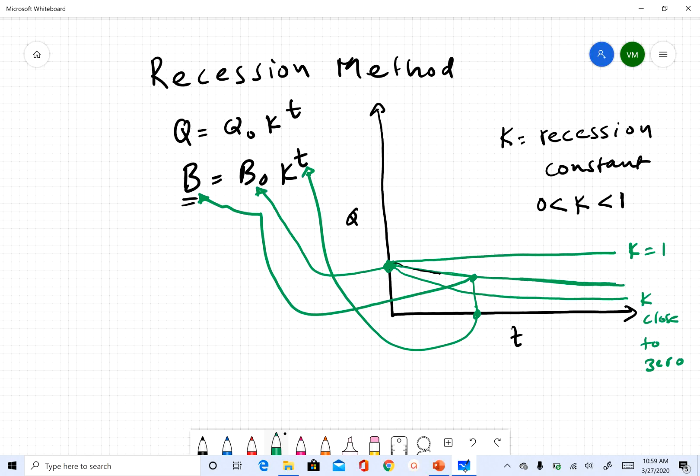As you decrease the value of k, you will see the recession curve going down. This is what this equation does.